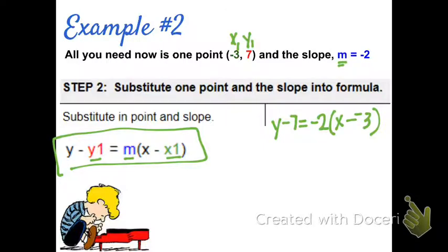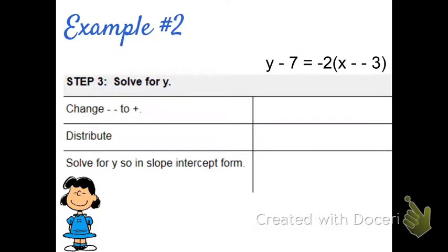So now that I've substituted it into the formula, I can now try to solve it for y. So step 3 is to solve for y. So this is what we have. The first step, if I have any minus negative signs, I'm going to just change that to plus.